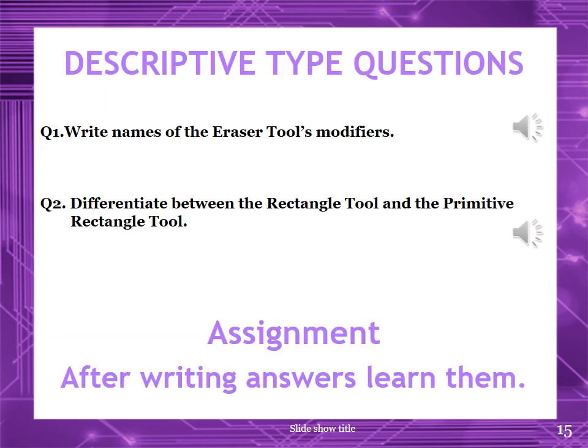Now we will do descriptive type questions, the same as we used to do in class. You have to do these questions in your notebook. Question 1: Write the names of the eraser tool modifiers — you can find them on page 134. Question 2: Differentiate between the rectangle tool and the primitive rectangle tool. You can write in your own words. Sample answer: When we draw a rectangle with rounded corners, we first have to specify the radius for the corners and then draw the shape. After drawing the shape, we cannot modify the radius. But if we use the primitive rectangle tool, then we can modify the radius after drawing the shape.